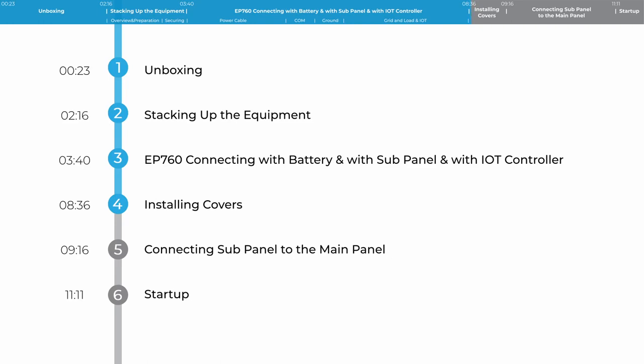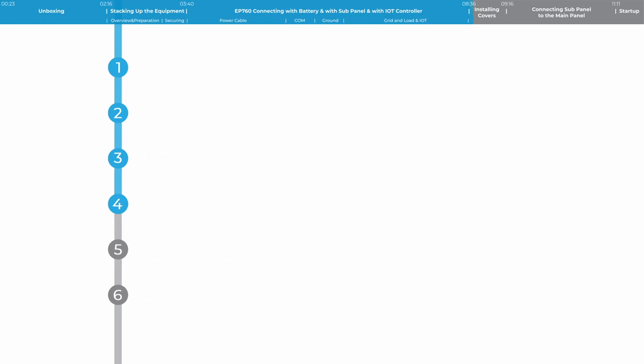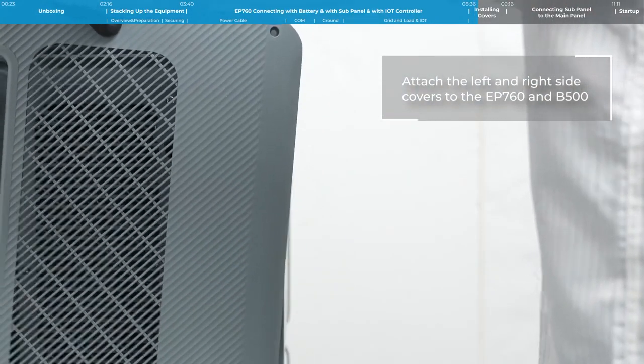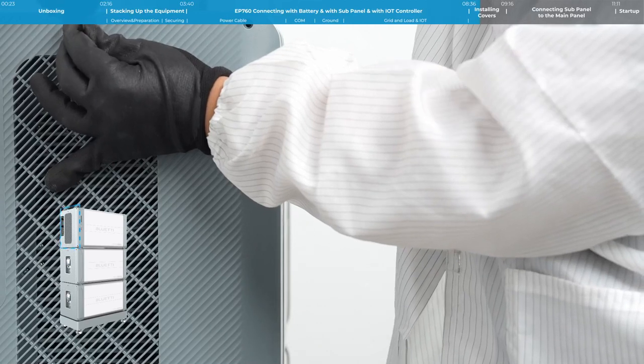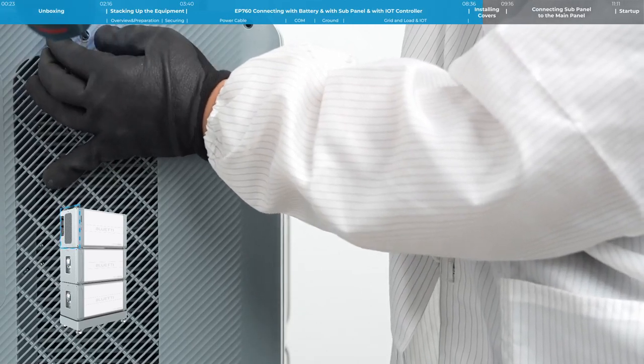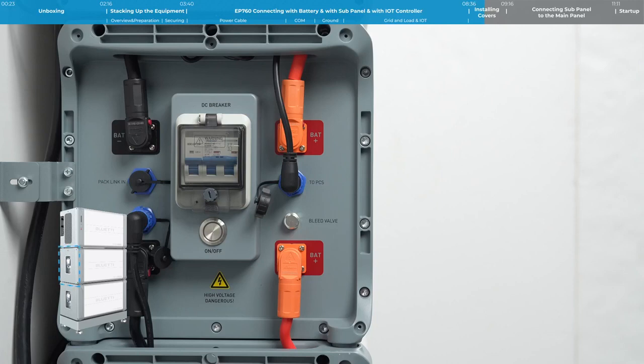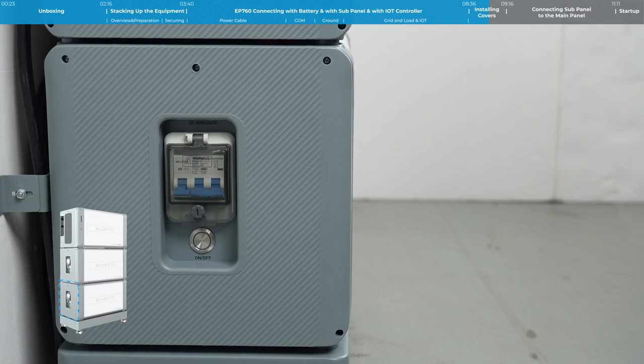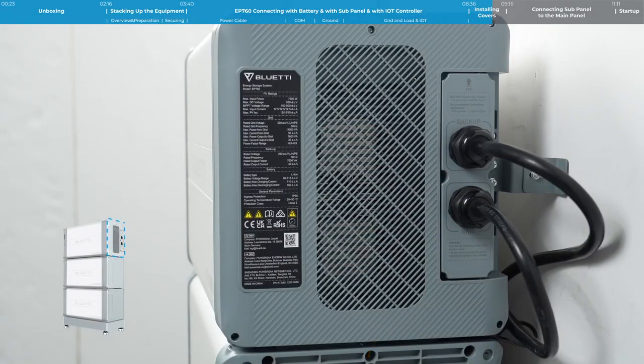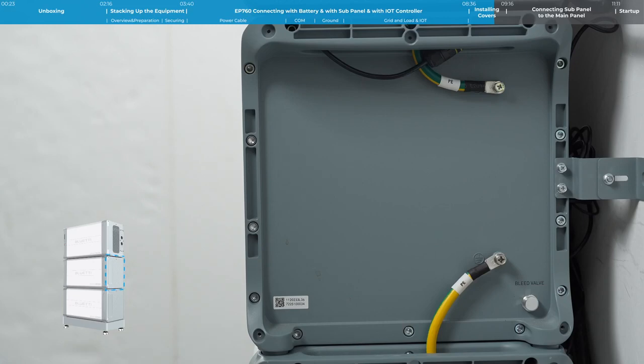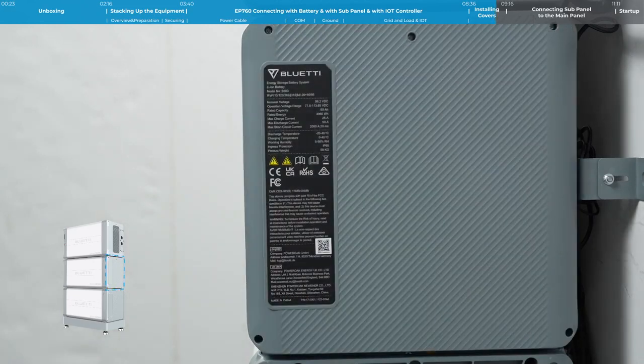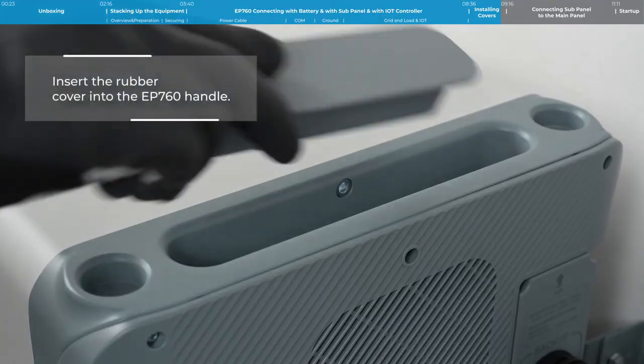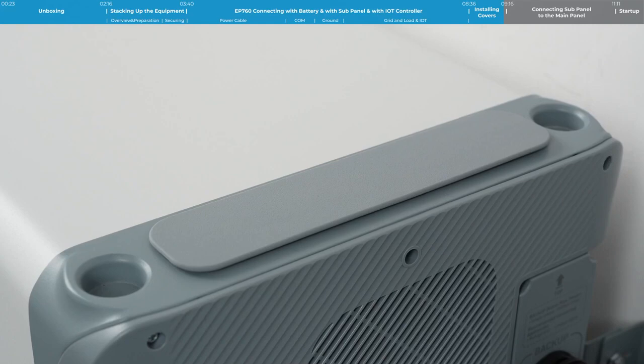Step 4: Installing covers. Attach the left and right side covers to the EP760 and B500 units. Insert the rubber cover into the EP760 handle.